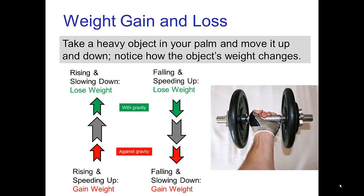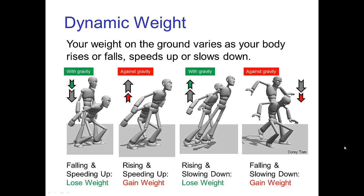But if you bring it to a stop as you're coming down, then it's coming down and slowing, and you're going against gravity — at that point the object should feel heavy in your hand. This kind of variation of weight you could call dynamic weight, and this same variation occurs with characters.